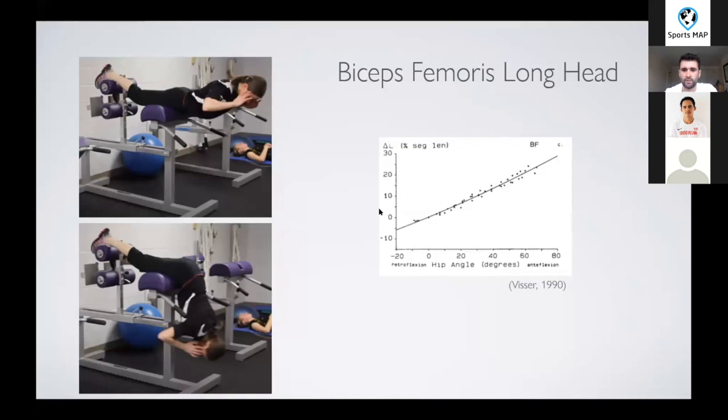So if we set the exercise up so the athlete can achieve plenty of hip flexion and emphasize the tension in this portion of the rep, then we're potentially going to get more tension on that biceps fem.